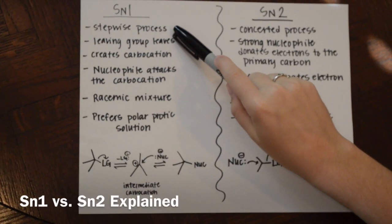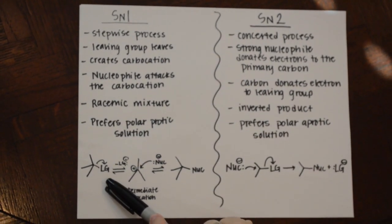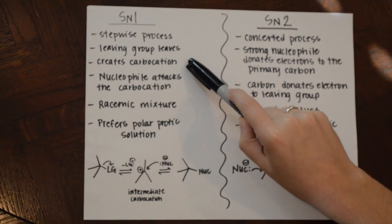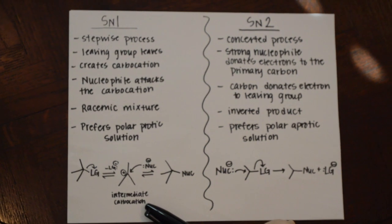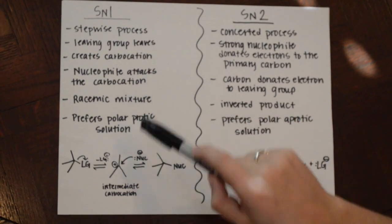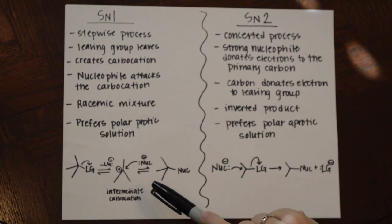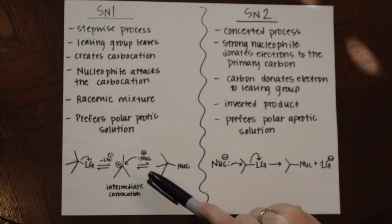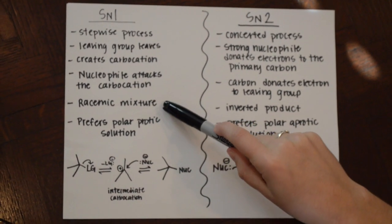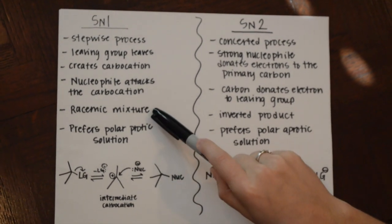An SN1 mechanism is a stepwise process. First, the leaving group leaves — a leaving group is a group capable of separating from a compound. This creates a carbocation, which is an intermediate containing a positively charged carbon atom. The nucleophile then attacks this positively charged carbocation. A nucleophile is a compound containing an electron-rich atom capable of donating an electron pair. The SN1 mechanism results in a racemic mixture because the carbocation can be attacked from either side.